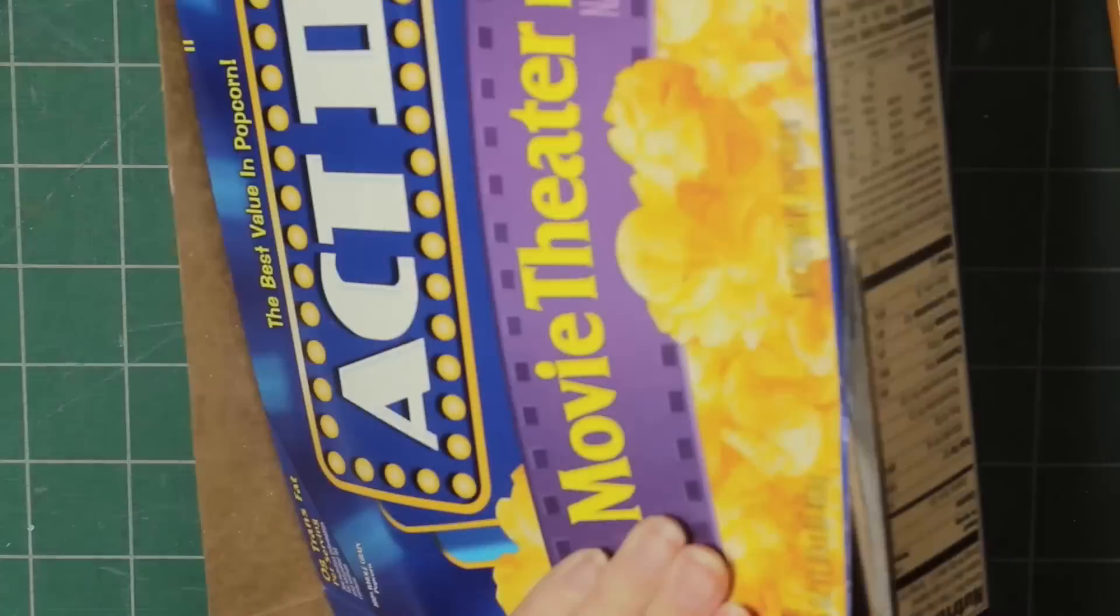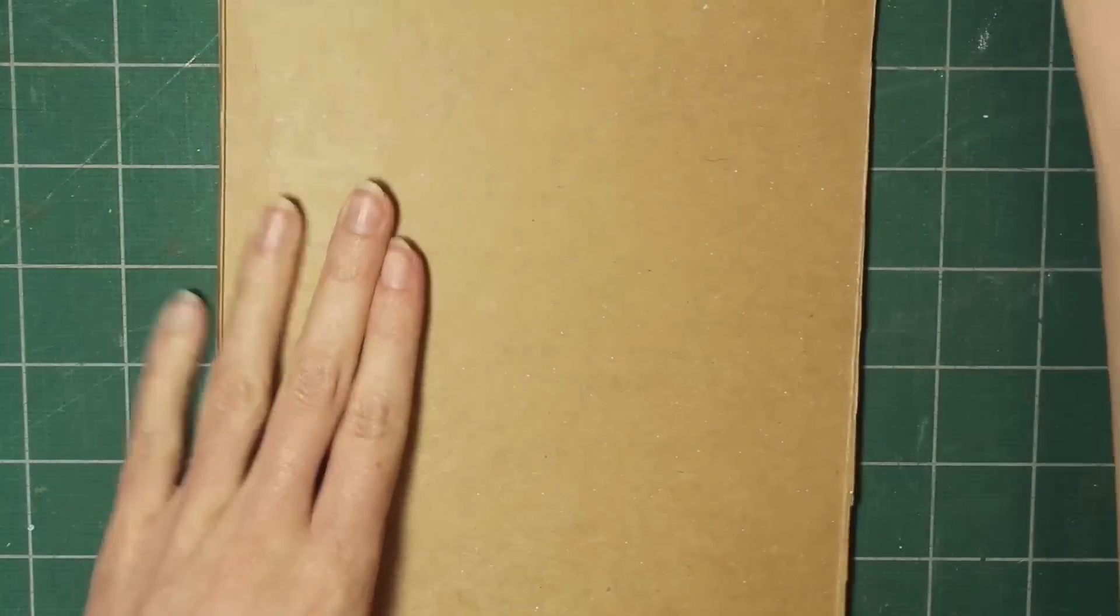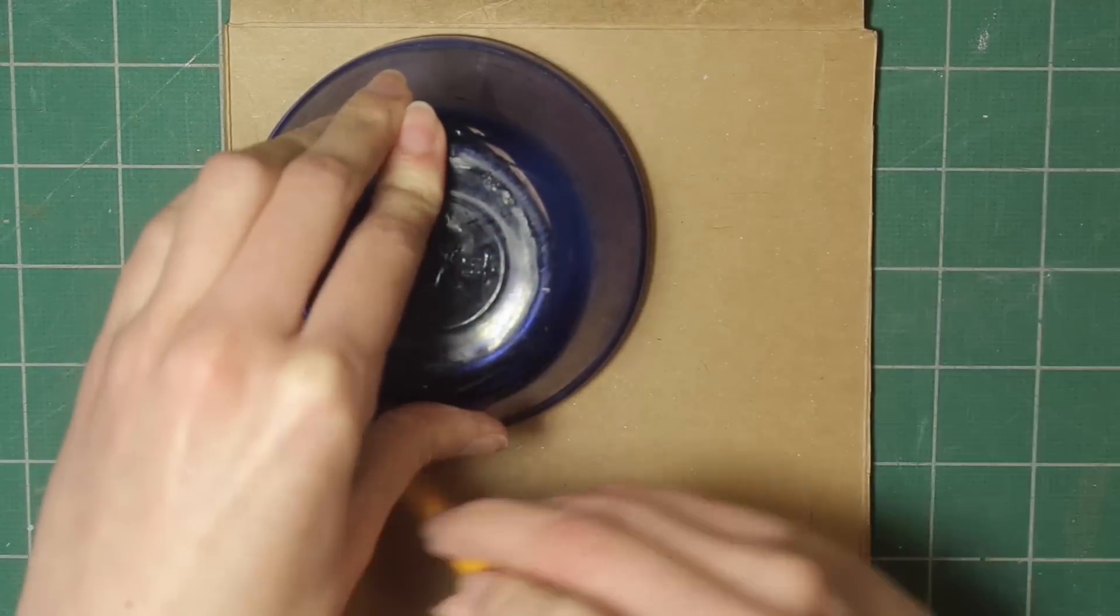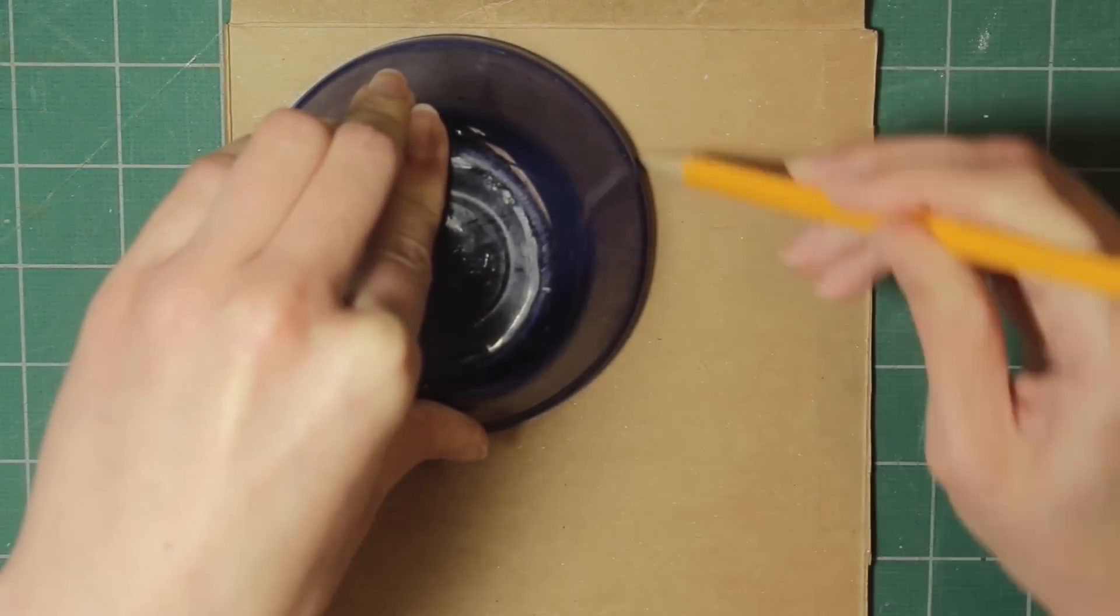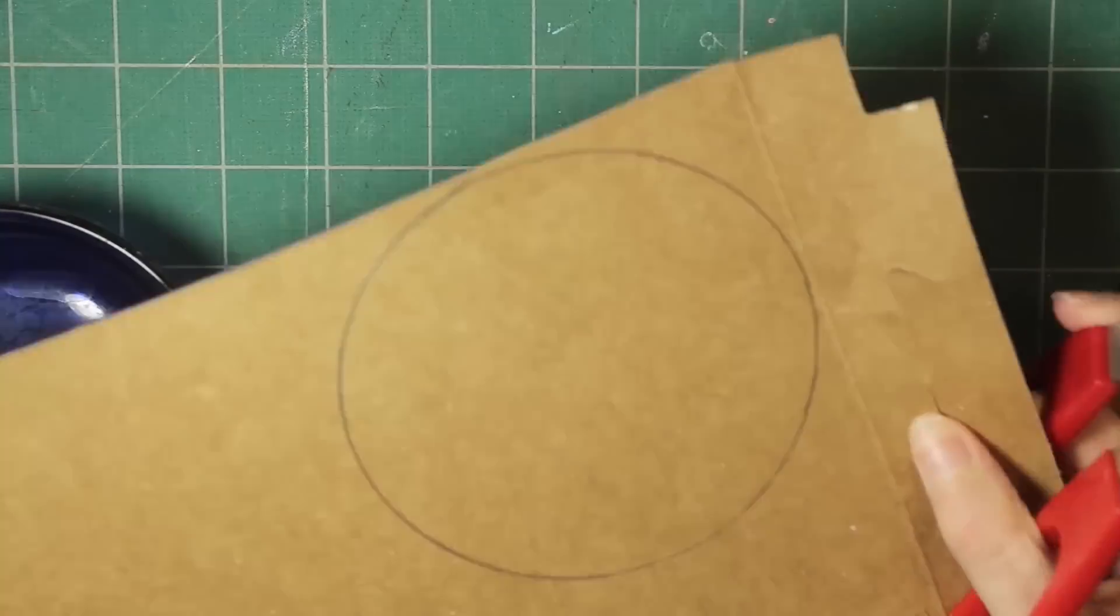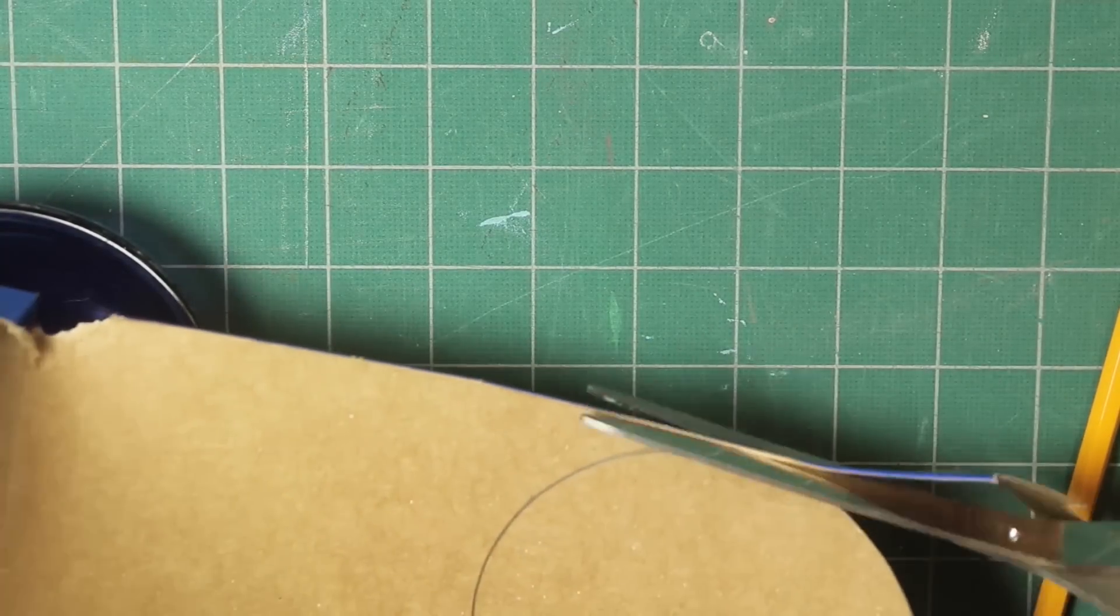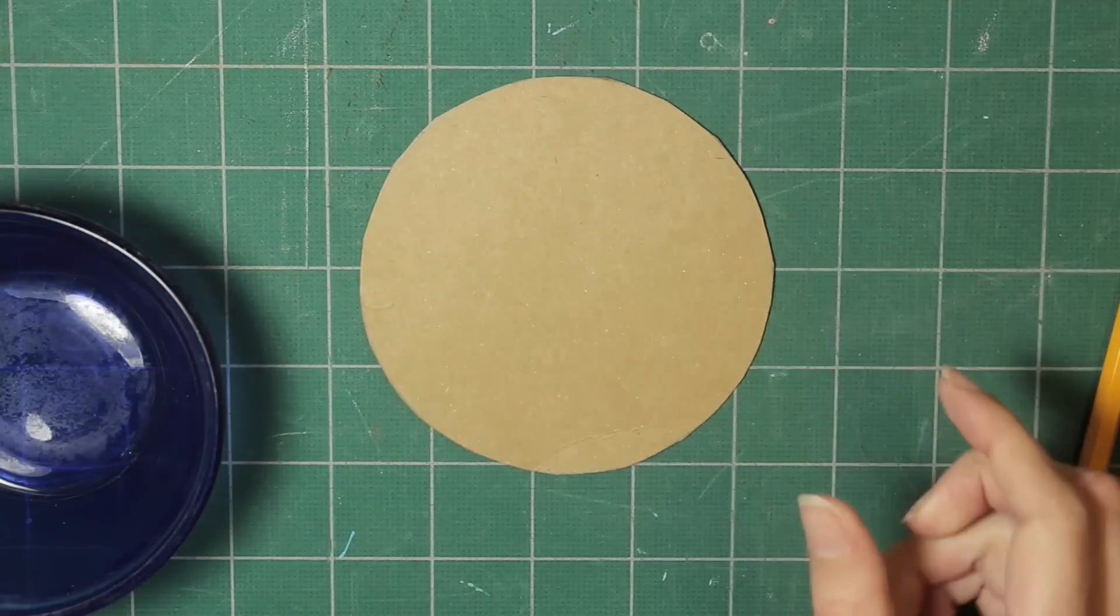If you're using a box, go ahead and cut that apart so you just have one piece, and then trace the object onto the cardboard. You'll be left with this.